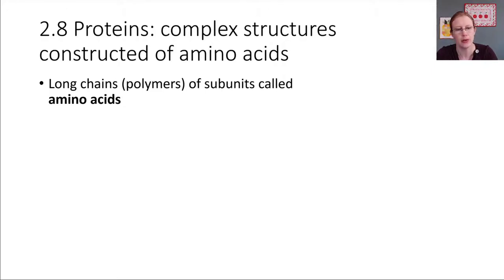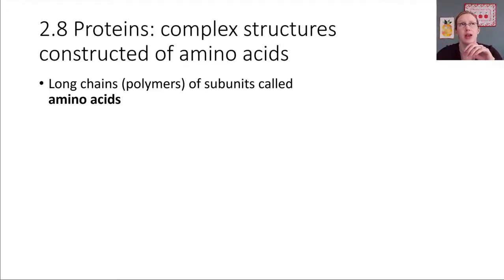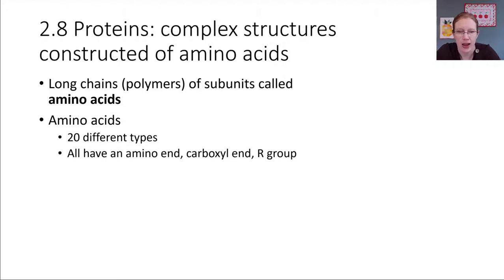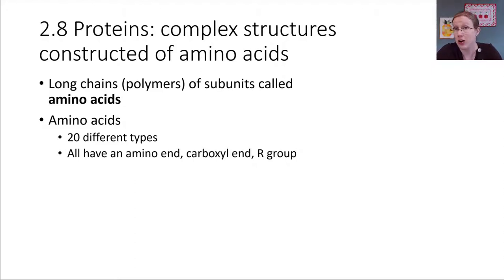Proteins are built from connections of molecules called amino acids. Take amino acids and connect them up together and what you can end up building is a protein. There are a lot of different amino acids that exist — we know of 20 different amino acids that exist naturally. They all have a similar backbone to them, and it's a carbon-based backbone.